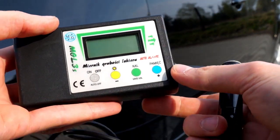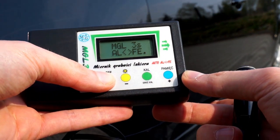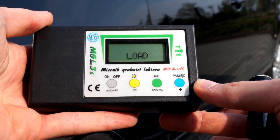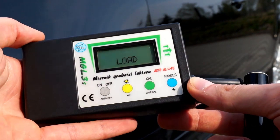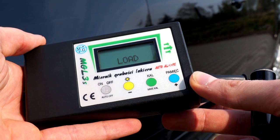Paint thickness meter will help you find repainted and damaged elements in your car. It can measure paint coat thickness on steel and aluminum elements.